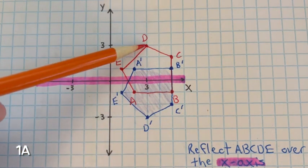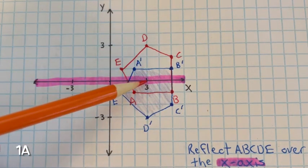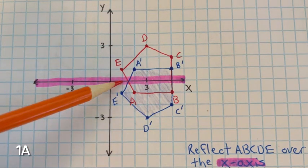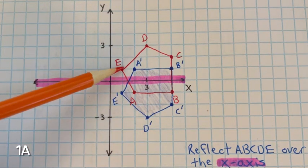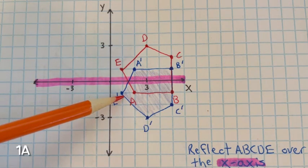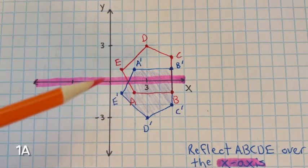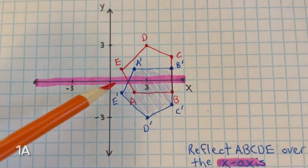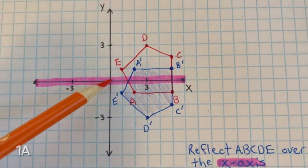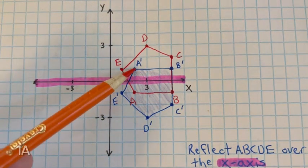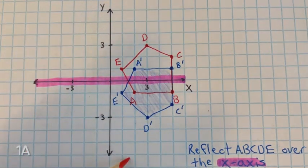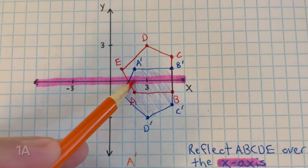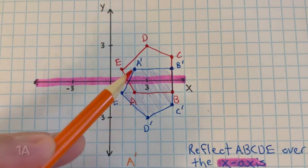D is three units above, so d prime is three units below. E is one unit above, so e prime is one unit below. Now we need to determine what are the coordinates for a prime. A prime is a coordinate of 2, comma, 1 — 2 on the x, 1 on the y.